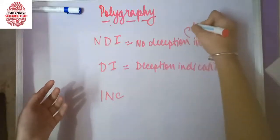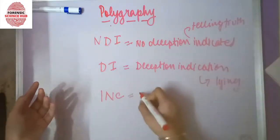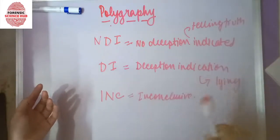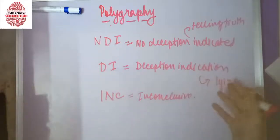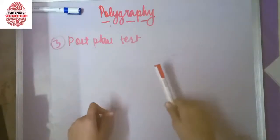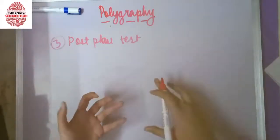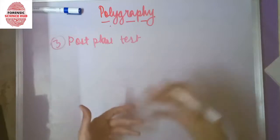INC means 'inconclusive,' indicating the examiner cannot conclude whether the person is lying or not. The last stage is the post-test phase. In this period, the examiner tells the examinee about the results obtained and shows them the graph.